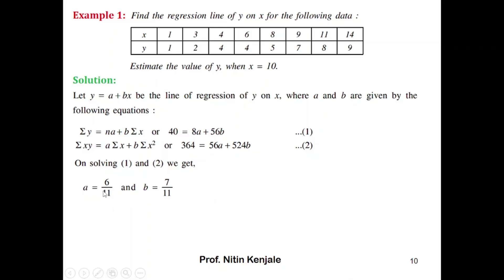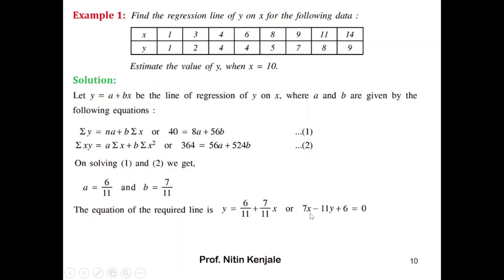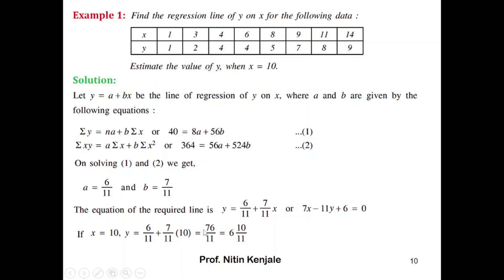Solving equations 1 and 2 gives a equals 6/11 and b equals 7/11. Substituting these back gives the line of regression y on x as y equals 6/11 plus (7/11)x, which simplifies to 7x minus 11y plus 6 equals 0. Now, to find y when x equals 10, we substitute x equals 10 into this equation and get y equals 76/11.